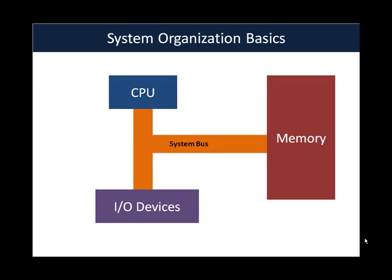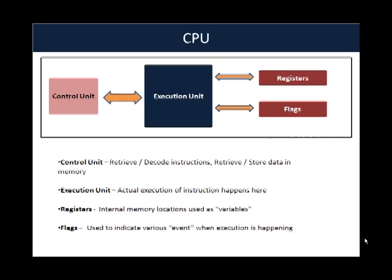The way in which these three basic building blocks communicate is using the system bus. We won't get into too much detail about what the system bus is composed of — the control bus, the data bus, and so on. We'll keep it at a very high level, with enough depth so that you can start programming as you will see in the later videos. Now let's dive into the CPU. The CPU consists of four parts, very broadly. The first is the control unit, which is responsible for retrieving and decoding instructions as well as storing and retrieving data from memory while the CPU is executing instructions.